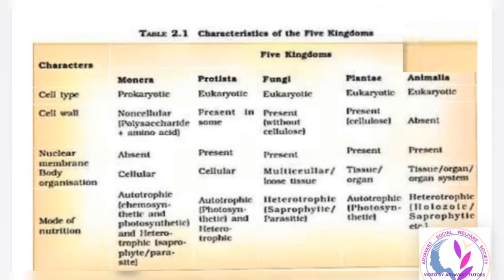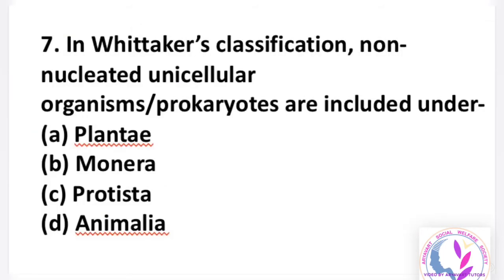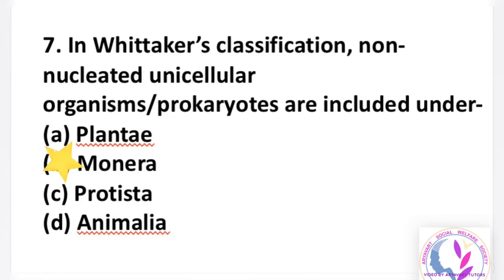Question number 7: in Whittaker's classification, non-nucleated unicellular organisms or prokaryotes are included under — option A: Plantae, B: Monera, C: Protista, D: Animalia. The answer is B, Monera.